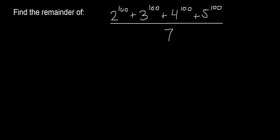I saw this question on a website and I thought I'd share it with you guys because I think it's a really good question. Can you find the remainder when 2 to the power of 100 plus 3 to the power of 100 plus 4 to the power of 100 plus 5 to the power of 100 is divided by 7?